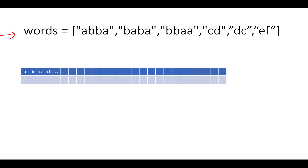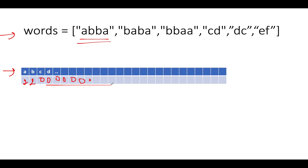The first question is: how do we identify whether two strings are anagrams of each other? We simply create the frequency array of all characters in the input string. For example, for 'aabb', we have 'a' two times and 'b' two times, and the rest are zero. So the frequency (anagram) string for 'aabb' is [2, 2, 0, 0, ...].